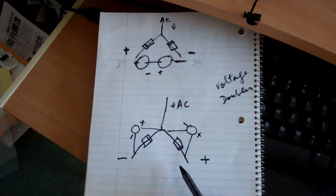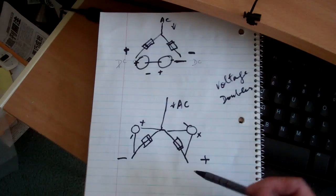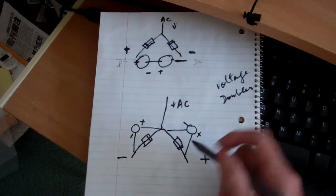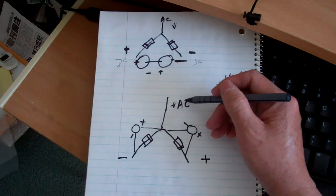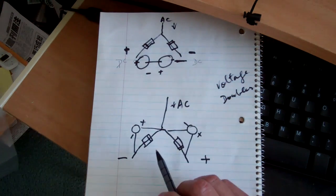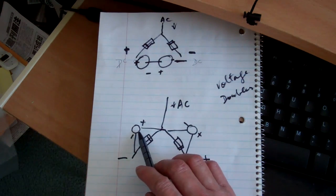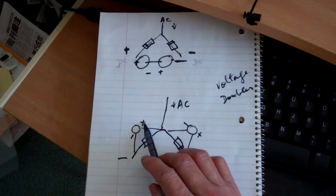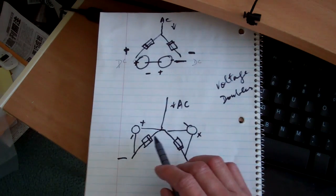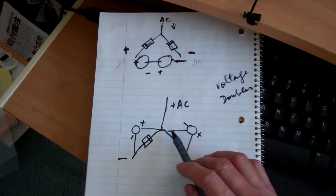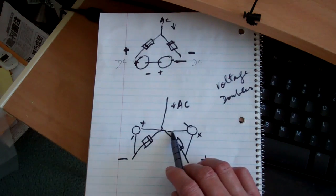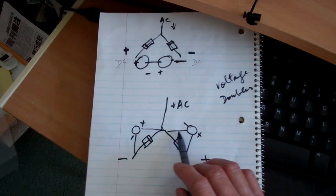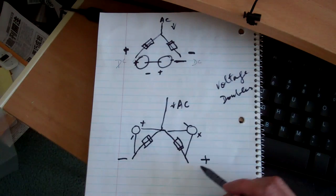The other voltage doubler that I got was from Ed Lenz. This is the AC coming in and then he places the capacitor here, the positive, connected here, connected here and the negative here and then this side, the negative and then to the positive.